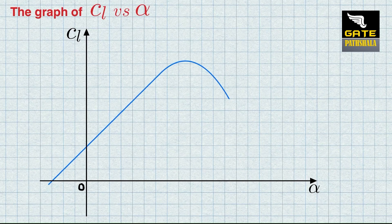The figure shows the typical variation of lift coefficient of an airfoil versus angle of attack. This is the CL-alpha curve for a positively cambered airfoil.